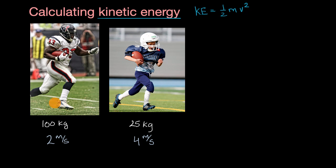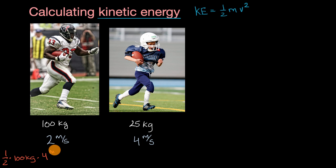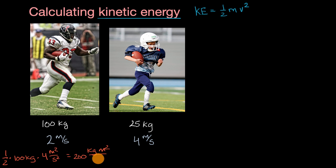Let's calculate the kinetic energy for the guy on the left. It's going to be one half times his mass, which is 100 kilograms, times the square of the speed — so times 4 meters squared per second squared. We have to make sure that we square the units as well. This is equal to one half times 100 is 50, times 4 is 200. The units are kilogram meter squared per second squared, which is the same as kilogram meter per second squared times meters — the units of force times distance, or energy — giving us 200 joules.